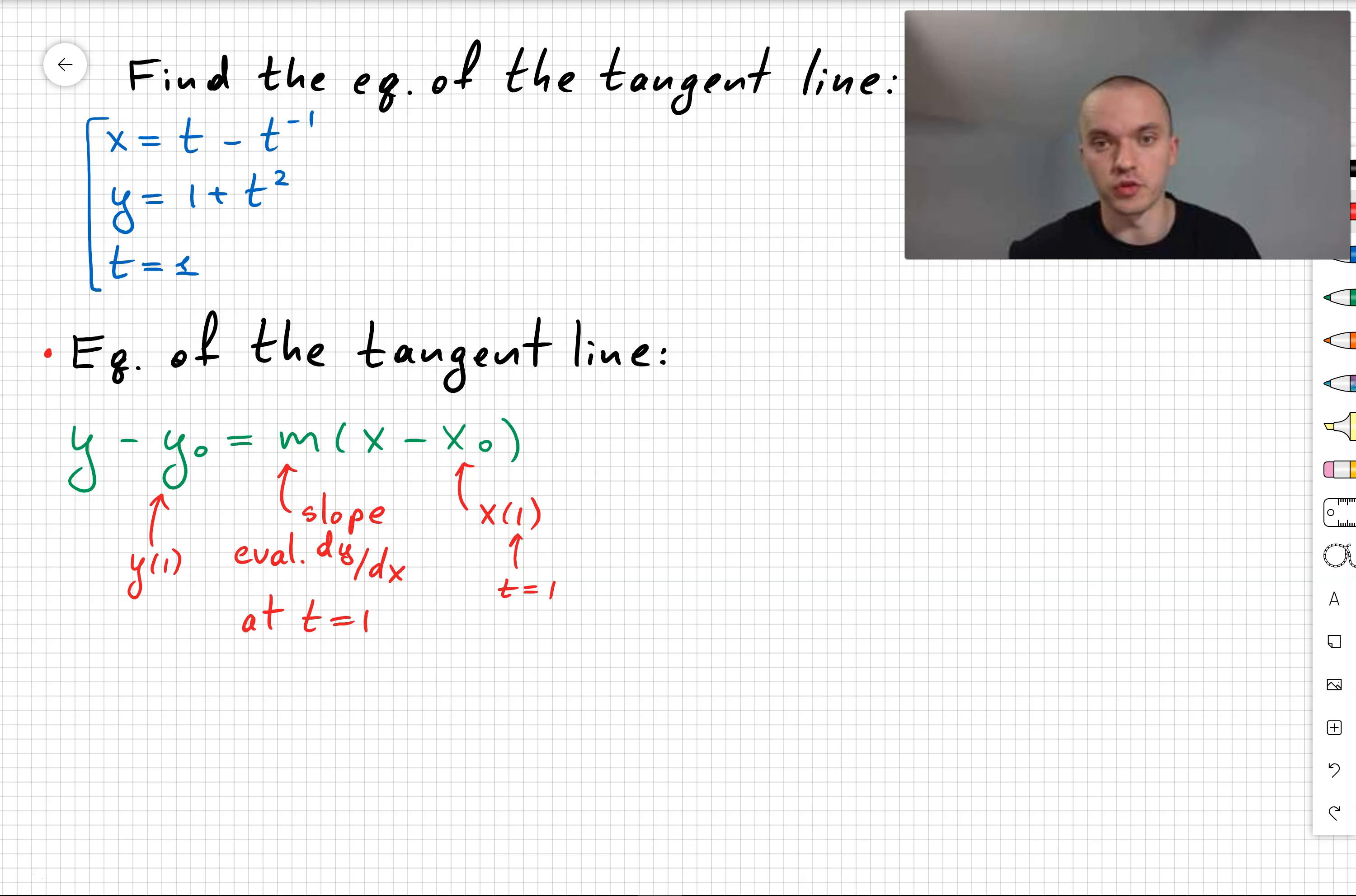Where m is the slope. In this case, the slope is given by the derivative evaluated at t equals 1. And x0 and y0, correspondingly, are the values of our parametric equations when t equals 1.